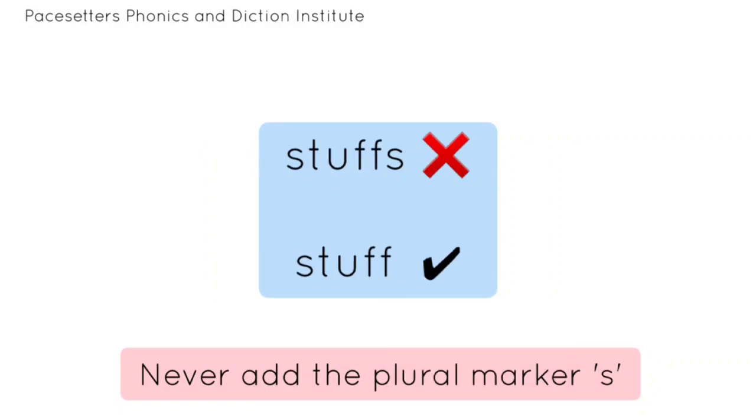Stuff. Never add an 's' to the word stuff. Stuff is stuff. Don't say stuffs. It is spelled S-T-U-F-F.